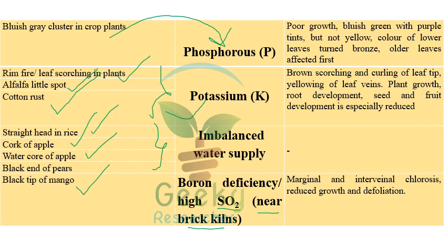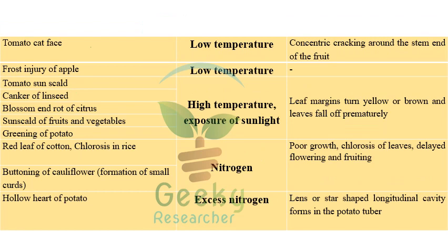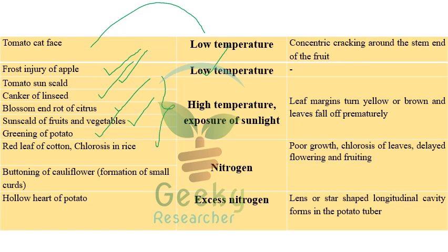If brick kilns are not nearby, black tip of mango is due to boron deficiency, corrected by boron application. Tomato cat face is caused by low temperature; frost injury of apple is also due to low temperature. High temperature or sunlight exposure causes tomato sunscald, canker of linseed, blossom drop of citrus, sunscald of fruits and vegetables, and greening of potato. Nitrogen imbalance causes red leaf of cotton, chlorosis of rice, and buttoning of cauliflower.